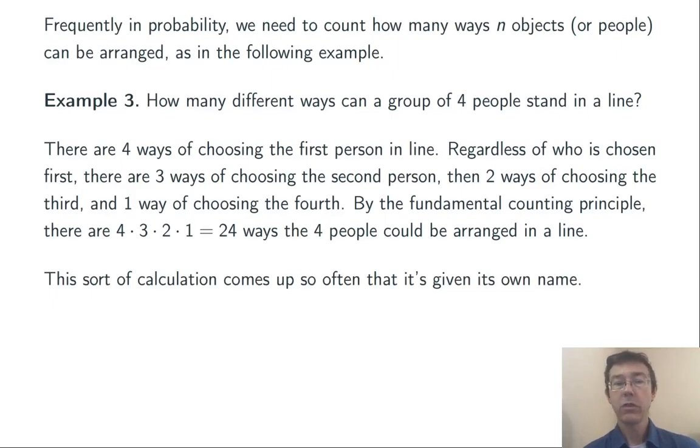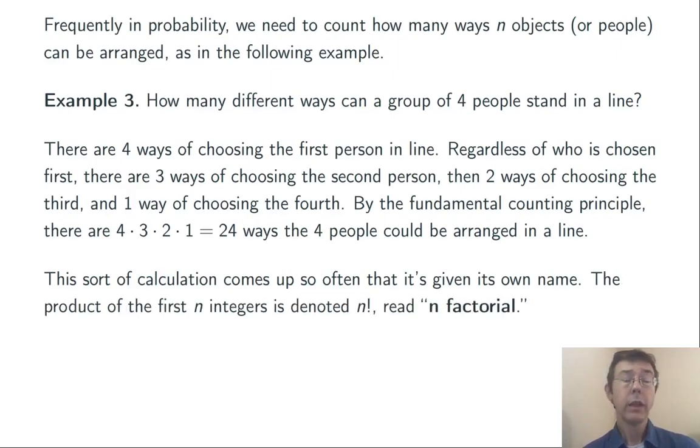This calculation comes up very often, so often that we give it its own name, four factorial. More generally, n factorial, n with an exclamation point, is the product of the first n integers, 1 times 2 times 3, all the way up to n.